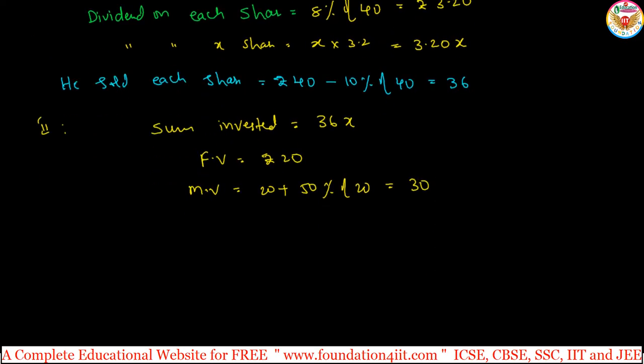Now, number of shares. We will find out. Number of shares is nothing but sum invested 36X by total number of shares, 30. That we can calculate 6X by 5. This is the number of shares bought.